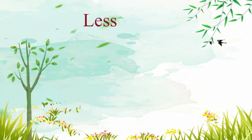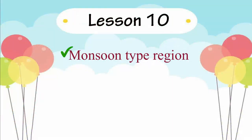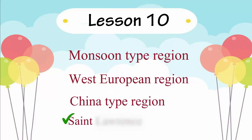Let us go through the key points of the lesson Natural Regions and Human Life Part 2. In this lesson, we shall know about the Monsoon-type region, West European region, China-type region, and St. Lawrence-type region.